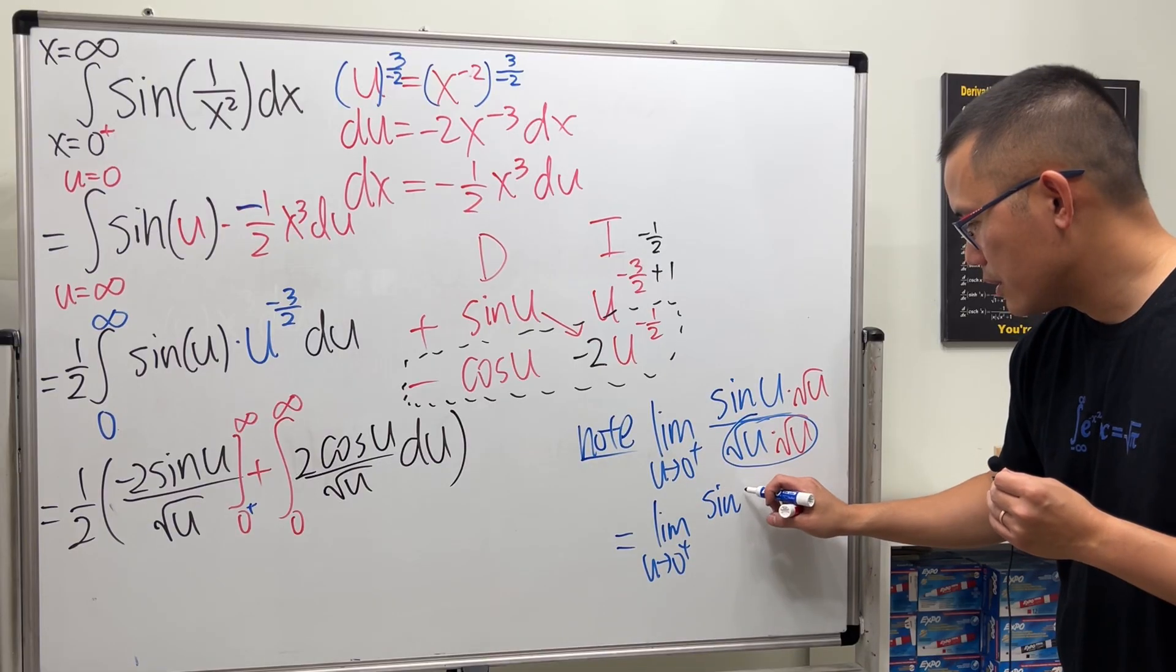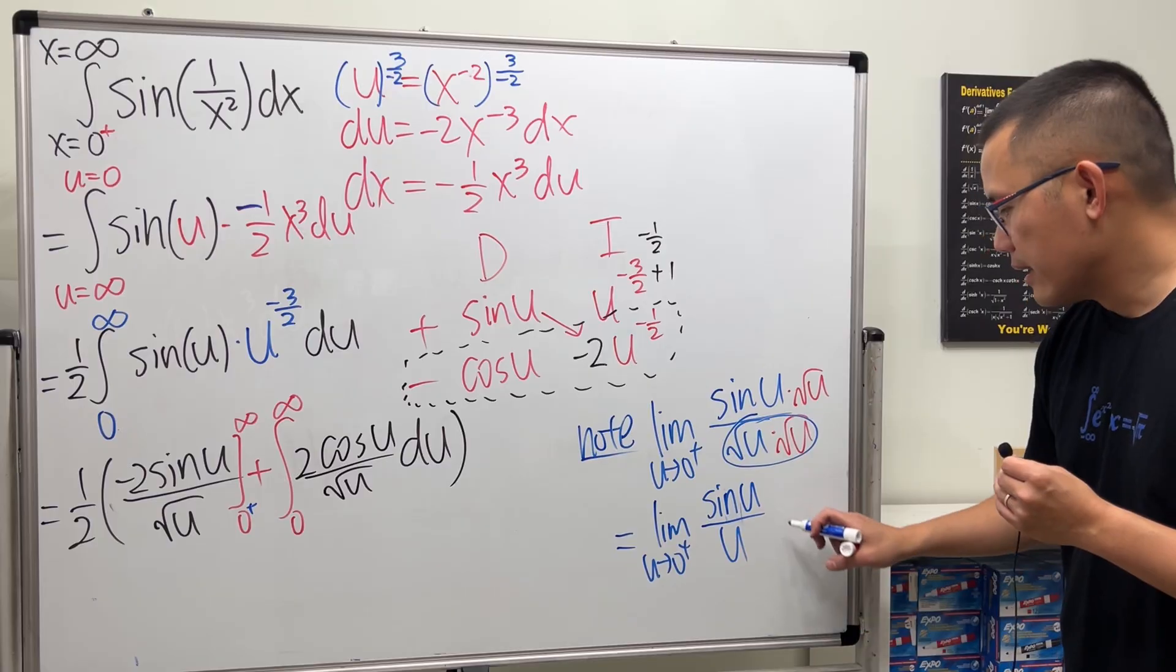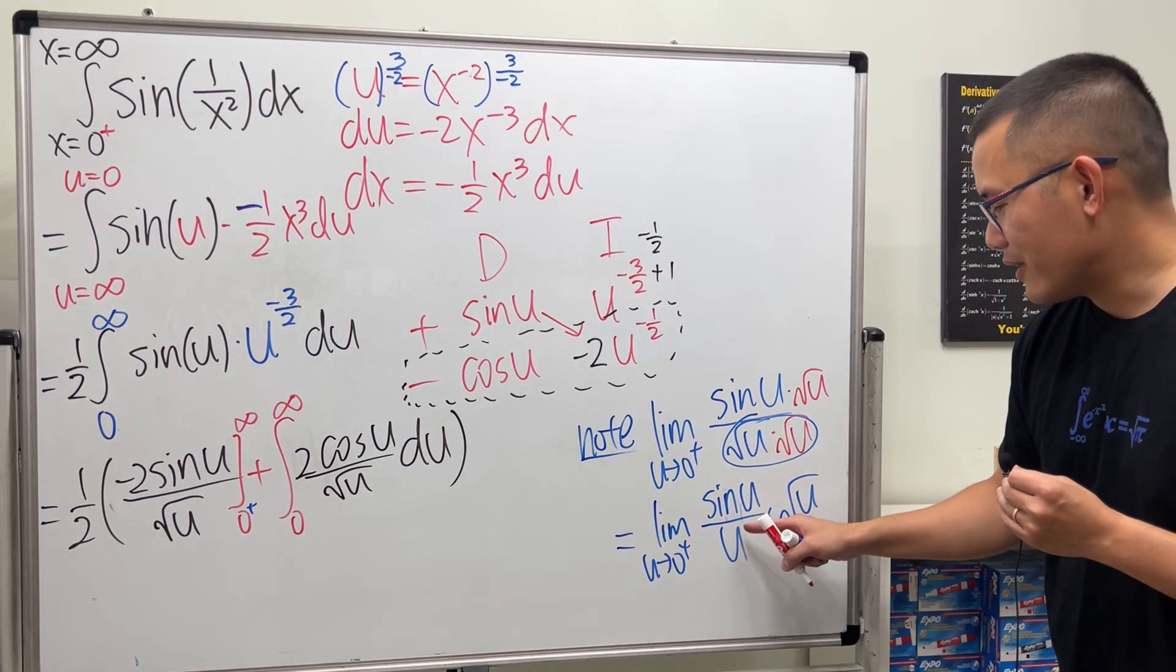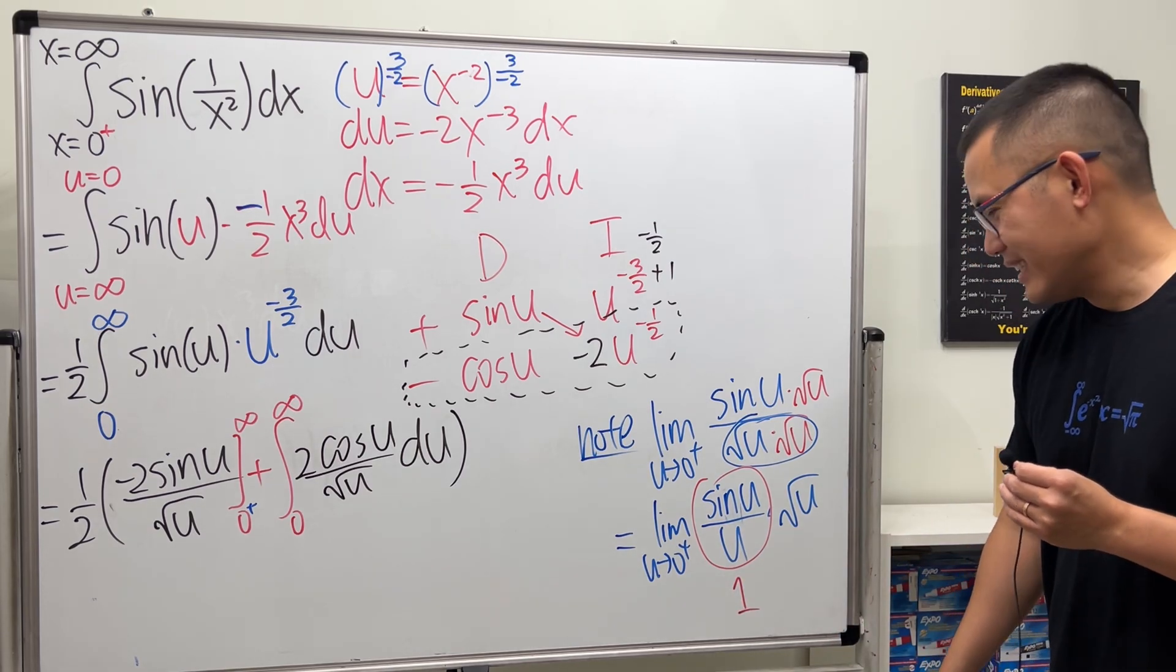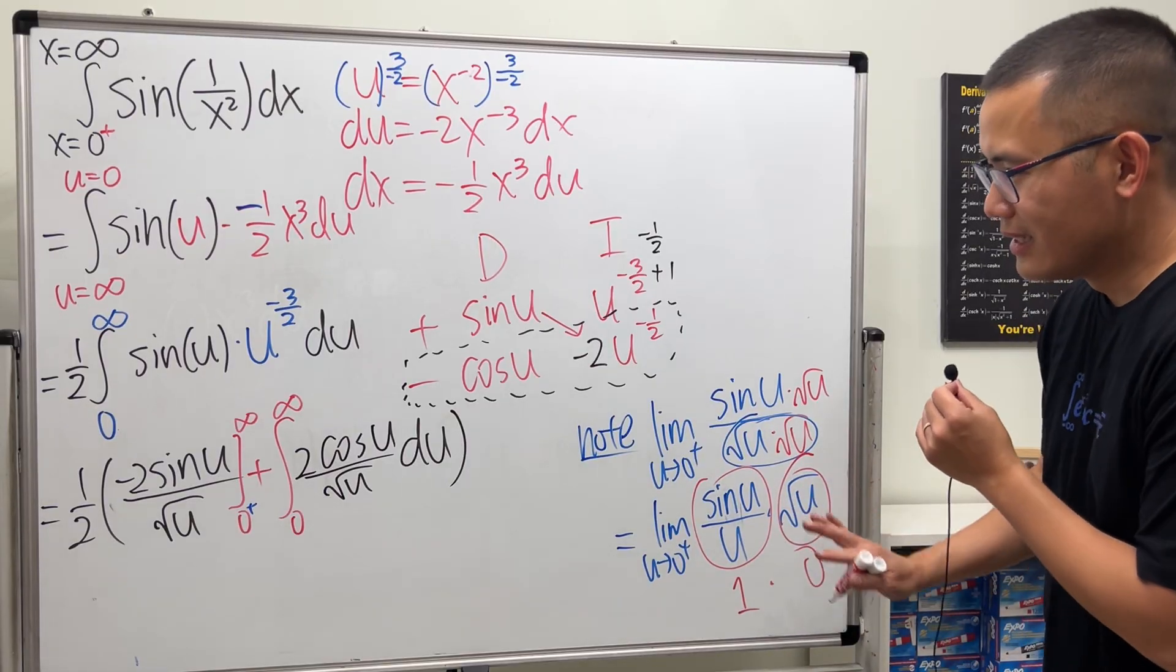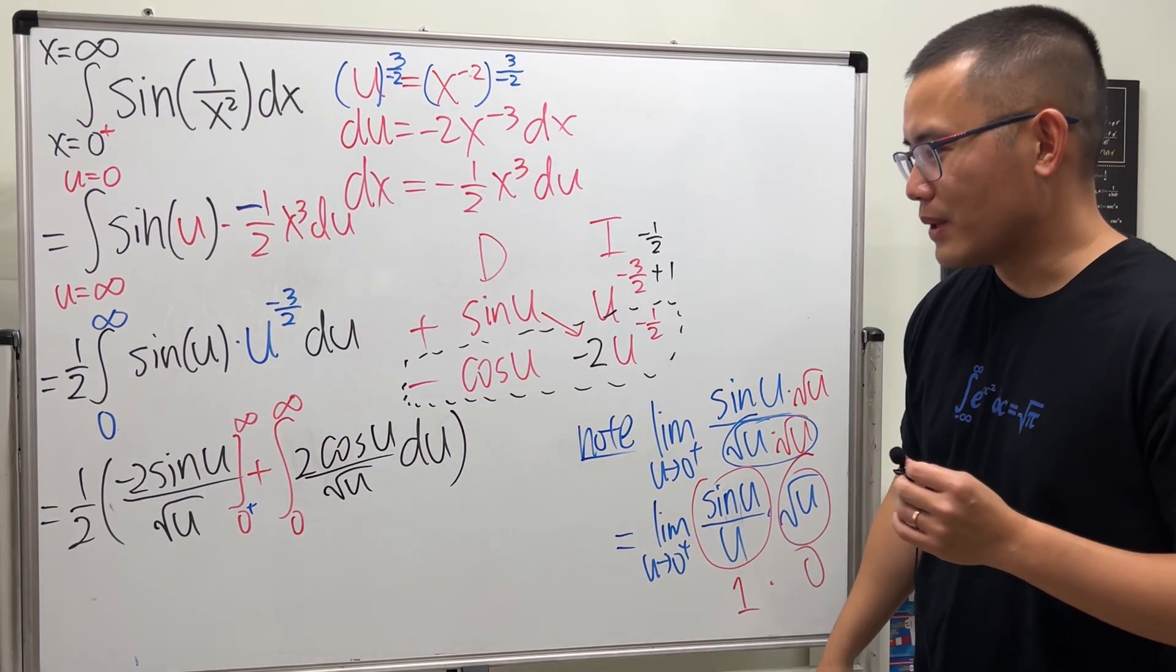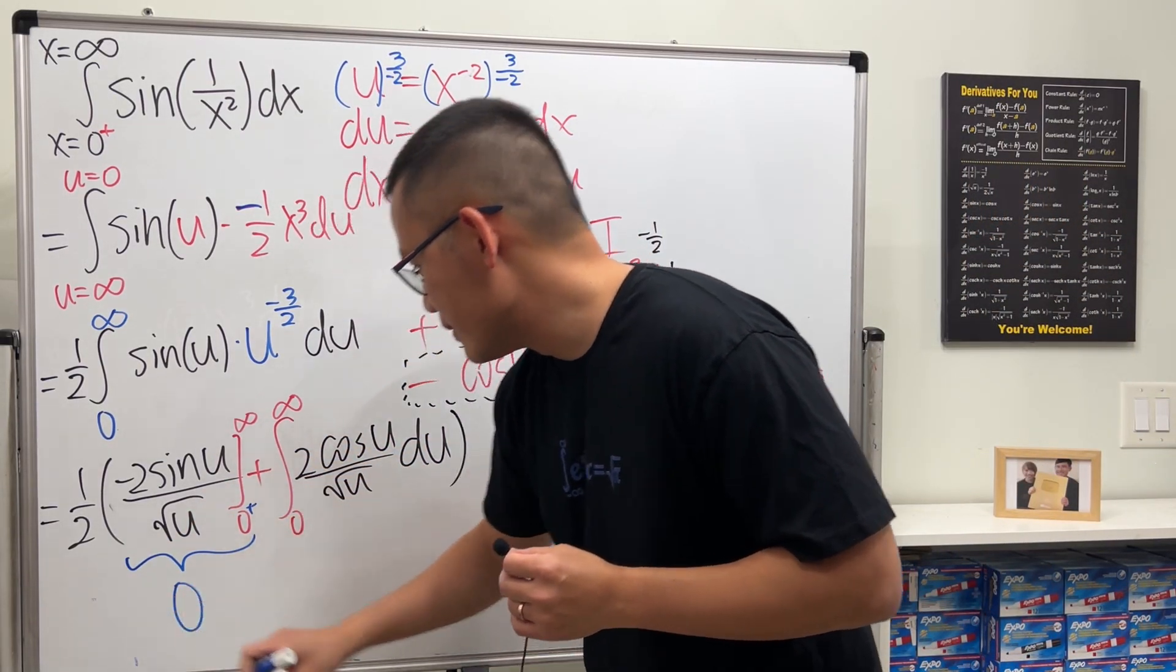That way, we get limit u approaching 0. So, this will give us just u. So, we have sine u over u times square root of u. Now, the limit as u goes to 0 plus or whatever. This thing will give us 1. Standard result. And then, when you plug in 0 in here, this thing will give us 0. So, it's 1 times 0. So, I did do the work for that. I did do the diligence for that. So, the first part here is just equal to 0.